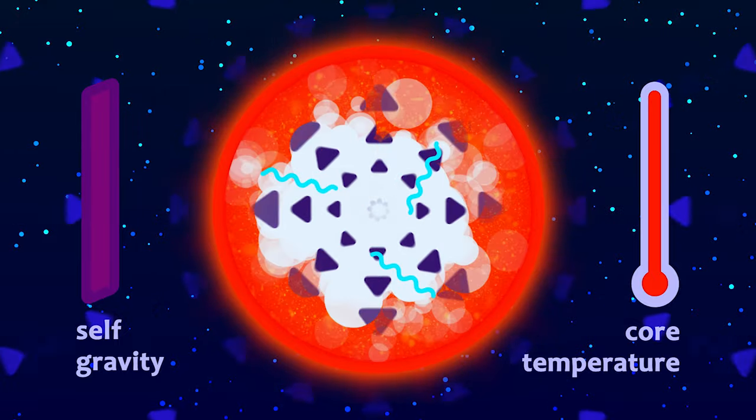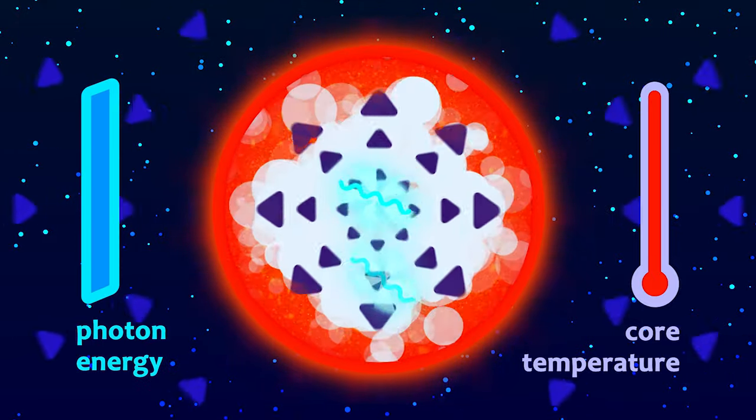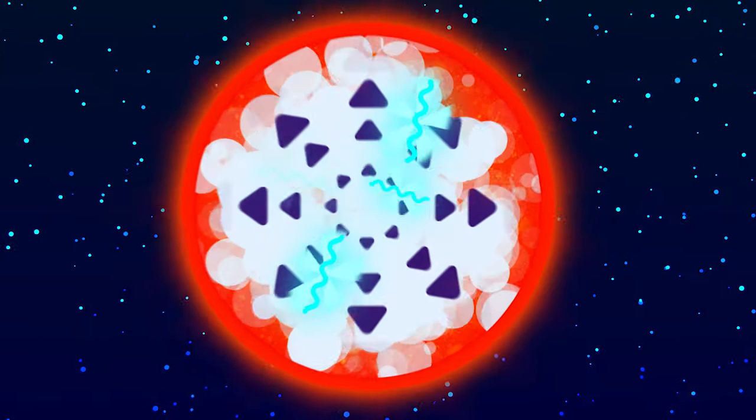Look, higher temperature means higher energies for photons in the stellar core. It is known from particle physics that very energetic photons are able to extract pairs of particles, such as electrons and positrons.